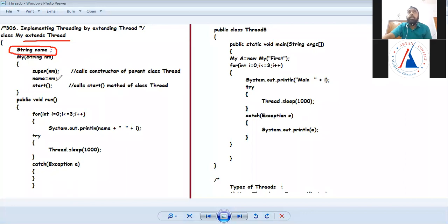I've just taken a string name. Then, I've written here super(nm). Let's understand it from the main. I've written My a equals new My First. What will go within nm? For nm I've written first. In nm I've written first, in nm I've written super(nm). Parent class constructor will be called.